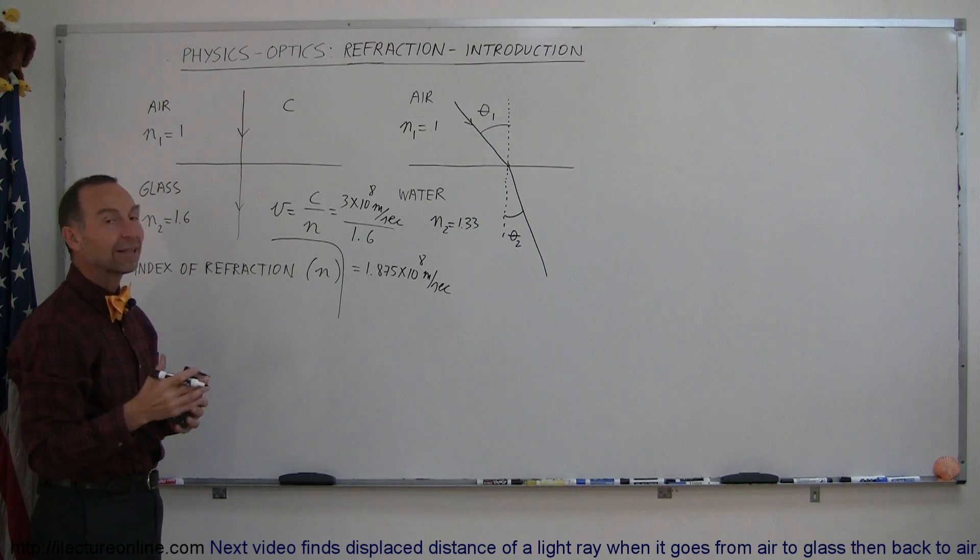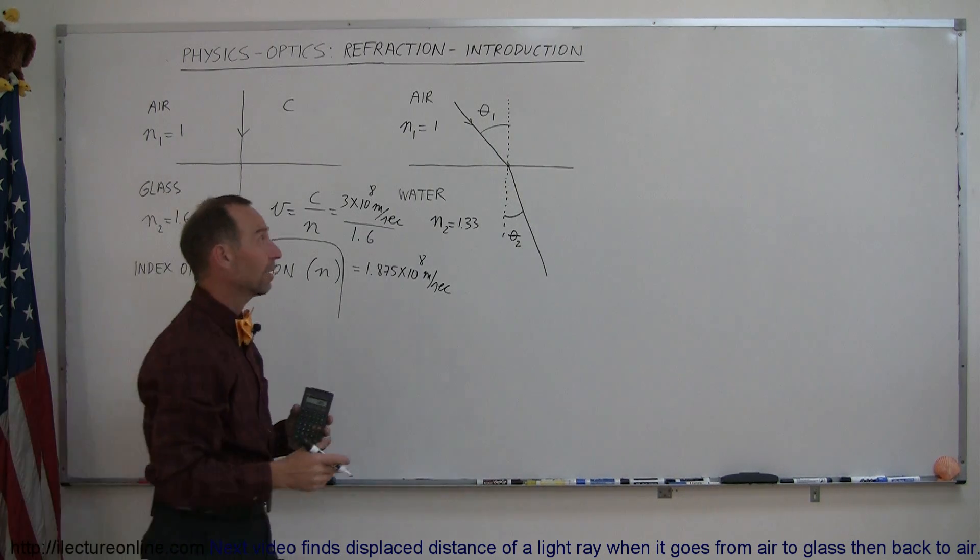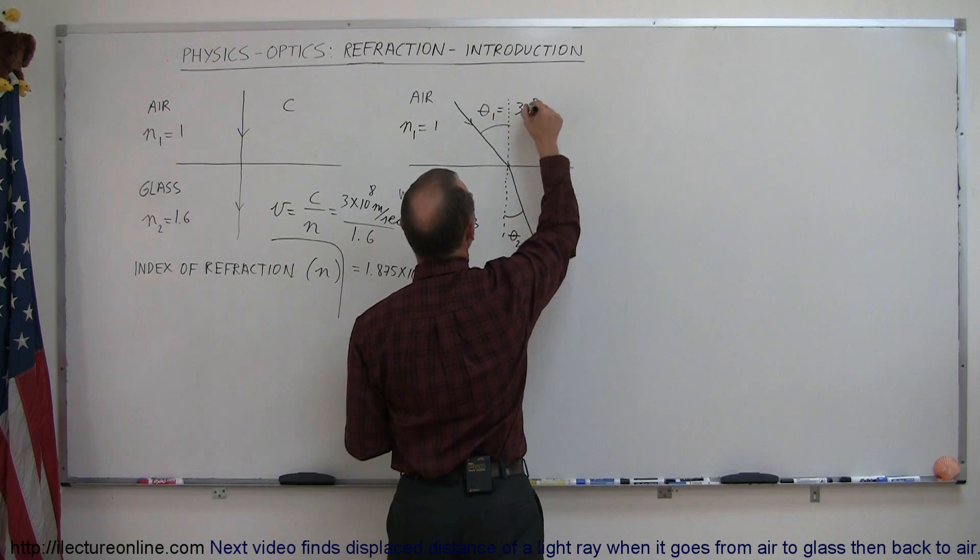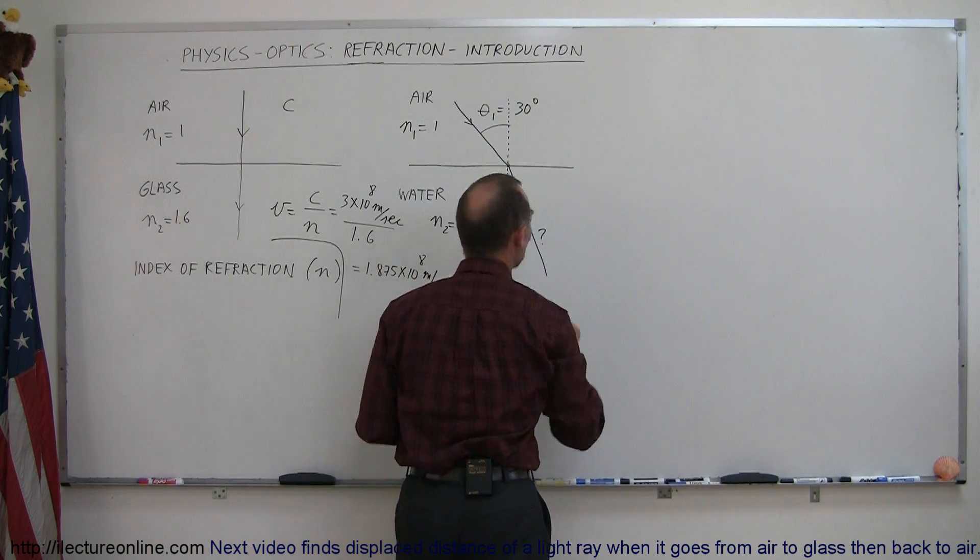Well, how do we actually find out what those angles are? Let's do a quick example. Let's say for example that theta 1 is equal to 30 degrees. Then what do you think theta 2 will be equal to?